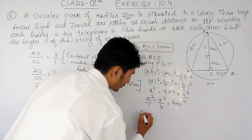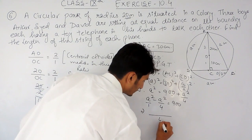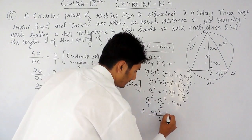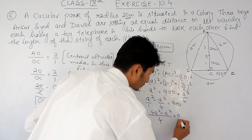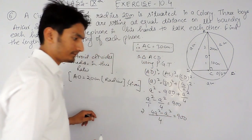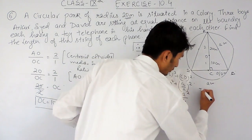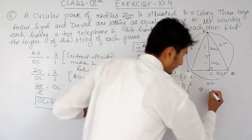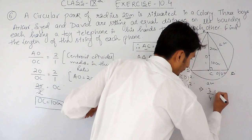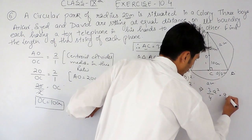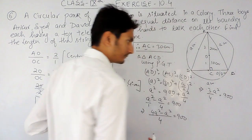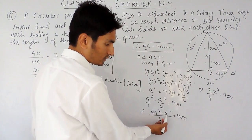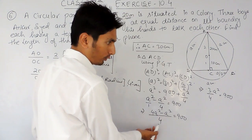Taking the LCM, 4a²/4 minus a²/4 equals 900, so 3a²/4 equals 900.